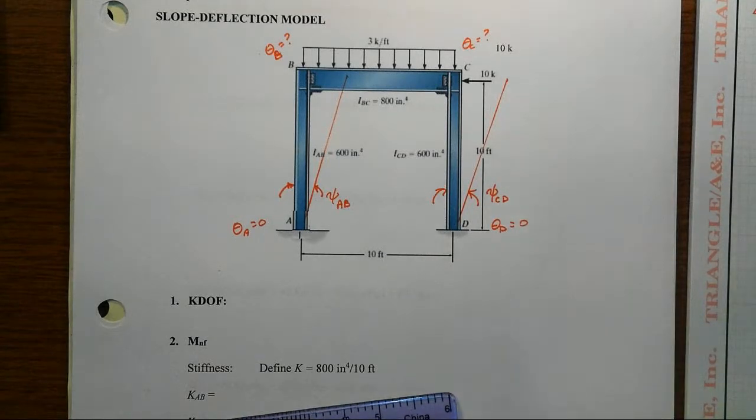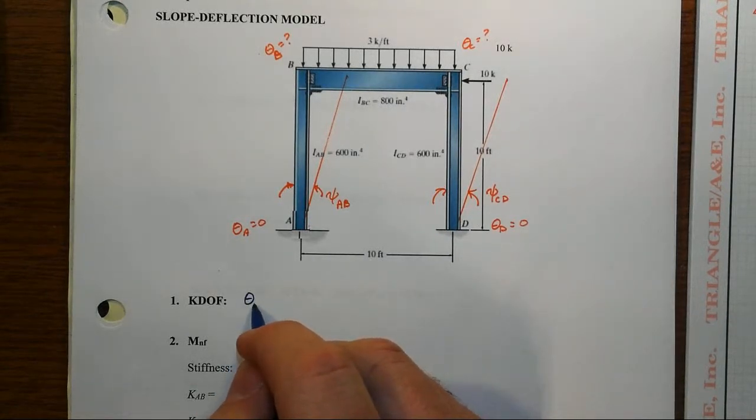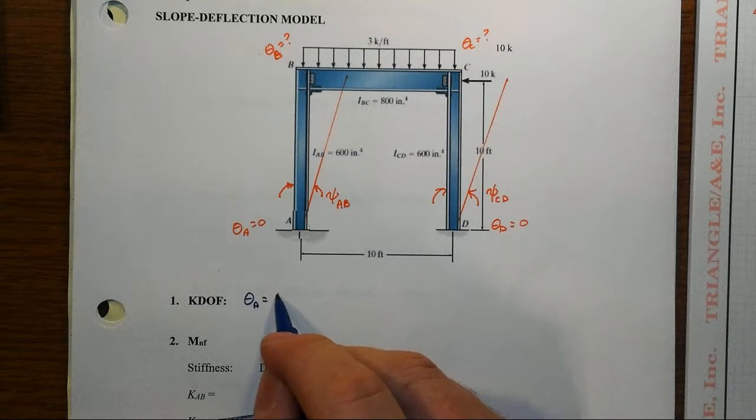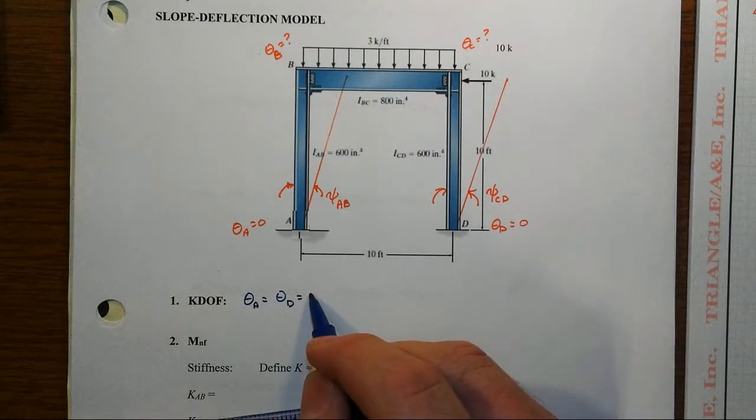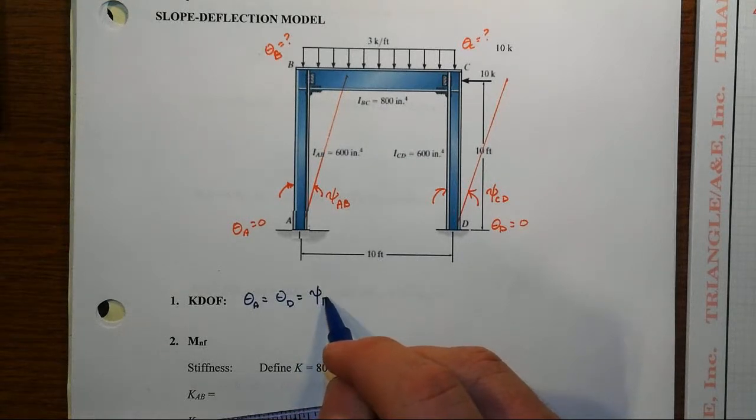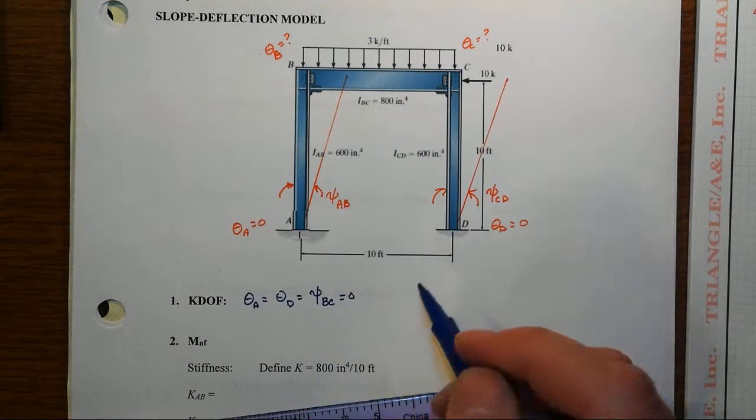So let's articulate this now down here in our steps. Our kinematic degrees of freedom are such that the ones that we know are going to be zero: theta A equals zero, theta D equals zero, the chord rotation for the beam is also going to be equal to zero.